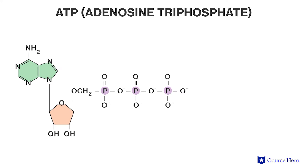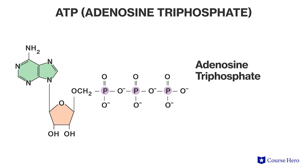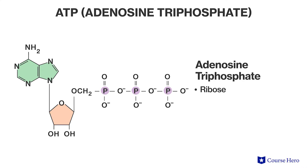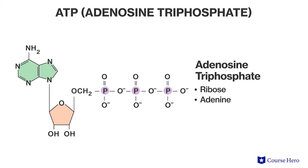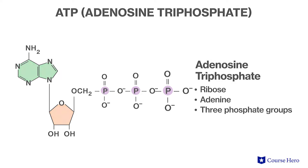ATP stands for adenosine triphosphate. It is a nucleotide consisting of the sugar ribose, the base adenine, and three phosphate groups.